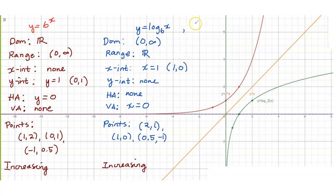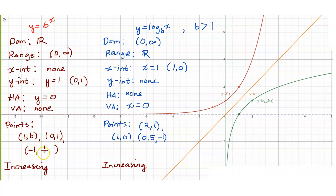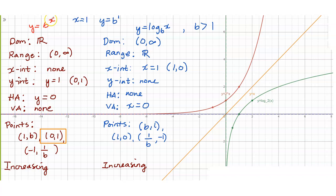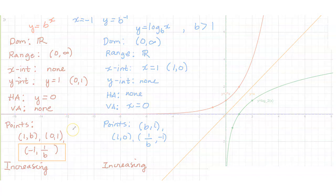In general, for any b greater than 1, all of these properties will still hold. The three points become (1, b), (0, 1), and (1/b, -1) for the logarithmic function. You do not have to memorize these points — you can easily get them by plugging values into the equation. When x equals 1, y equals b raised to 1, so you get (1, b). If x equals 0, y equals 1 since b raised to 0 is 1. If x is -1, y is b raised to -1, which is 1 over b.